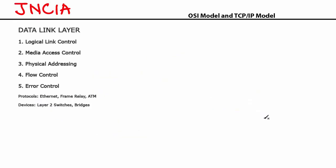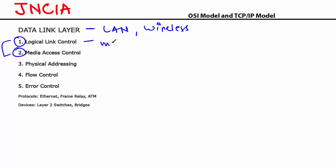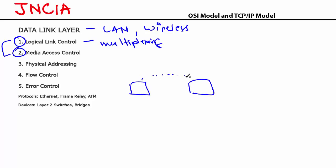Let's understand the data link layer, which is the second layer of the OSI model. It mainly deals with LAN communication and wireless communications. The data link layer can be subdivided into two sub-layers: the Logical Link Control (LLC) and the Media Access Control (MAC). The LLC mainly deals with multiplexing — you may have multiple protocols like IP, IPX, and AppleTalk all multiplexed at the LLC. The LLC also maintains logical links between your communicating devices.